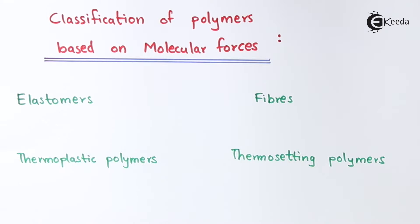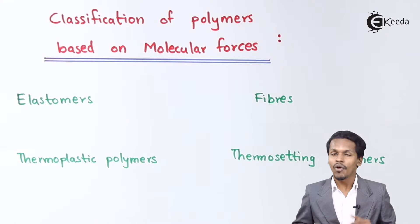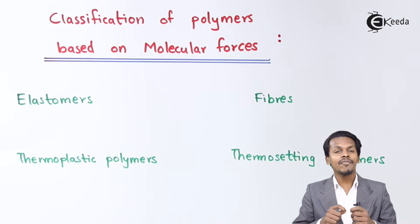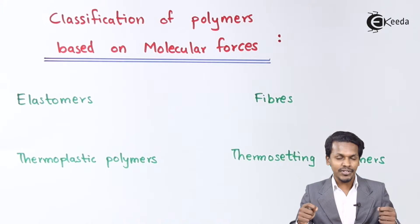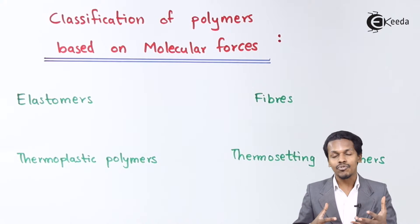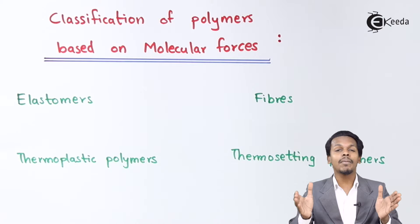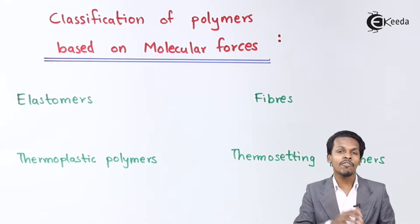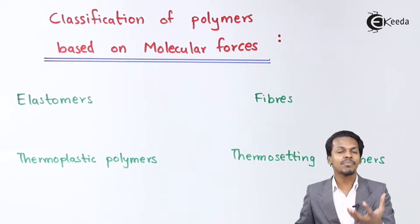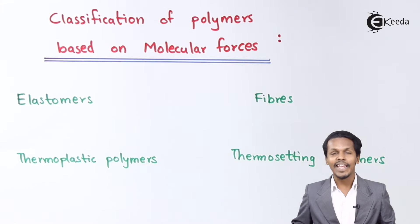Elastomers are polymers which have the property of elasticity. For example, rubber — if we apply a force on it, it will stretch, but the molecules never get destroyed. When we release the force, it comes back to its original shape. This property is known as elasticity, and polymers with this property are called elastomers.